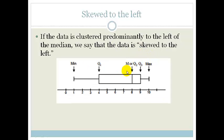If the data is skewed to the left, in other words, the data is found predominantly to the left of the median. That means most of the data is on this side of the median, and we say the data is skewed to the left.